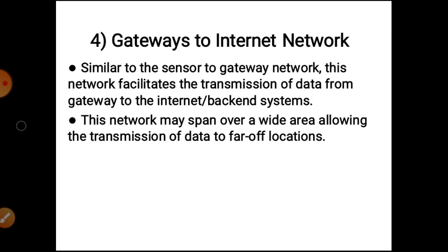Next layer is gateways to internet network. Similar to the sensor to gateway network, this layer facilitates the transmission of data from the gateway to the internet or backend system. This network may span over a wide area, allowing the transmission of data to far-off locations. The protocols generally used for such widespread networks are Ethernet, Wi-Fi, satellite, or cellular networks.